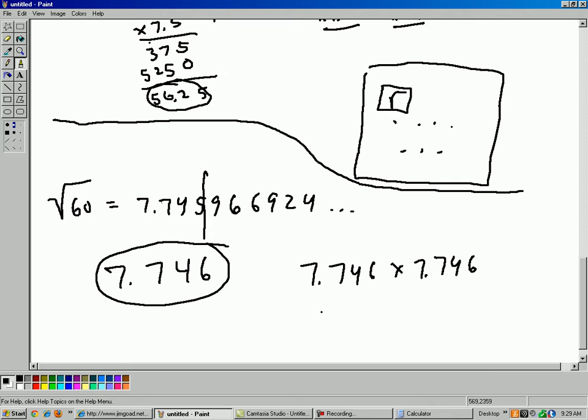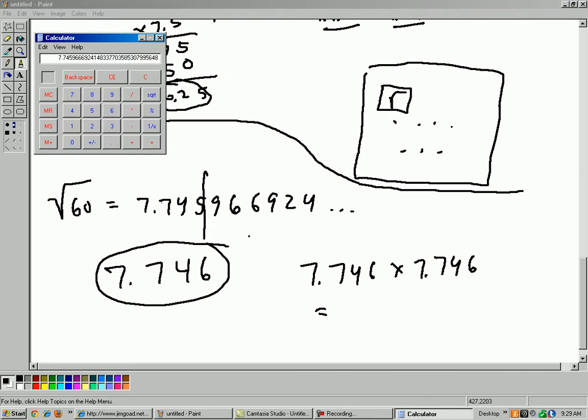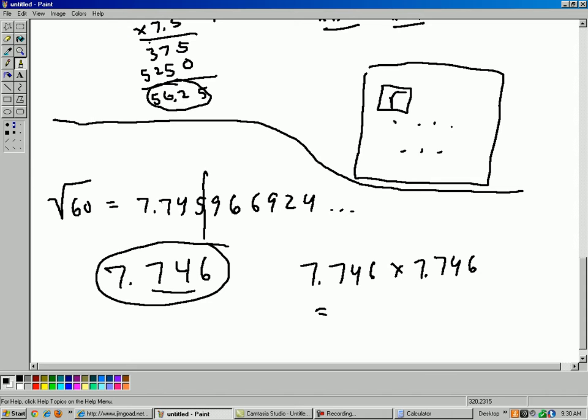If I actually multiply 7.746 times 7.746, I'm not going to get exactly 60. But I'm going to get pretty close. Let's go ahead and use the calculator here. Let's go ahead and do that calculation. 7.746 times 7.746 equals, you can see, 60.000516. So it's really close to 60. So at least for three digits of accuracy, this is really close to the true square root of 60.